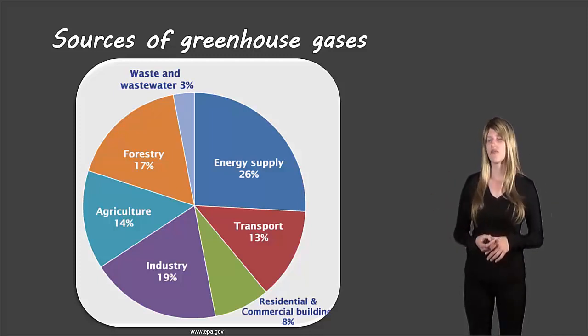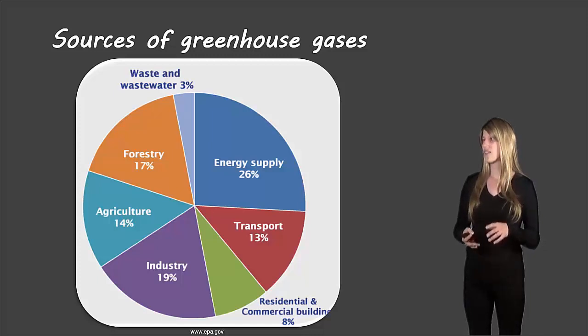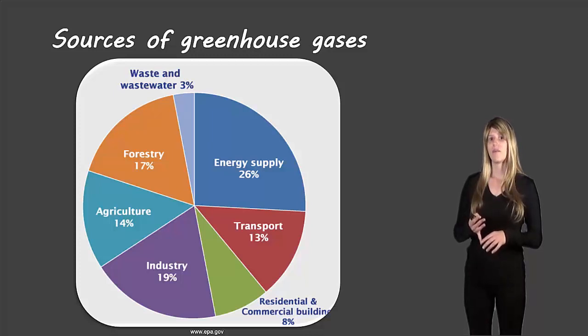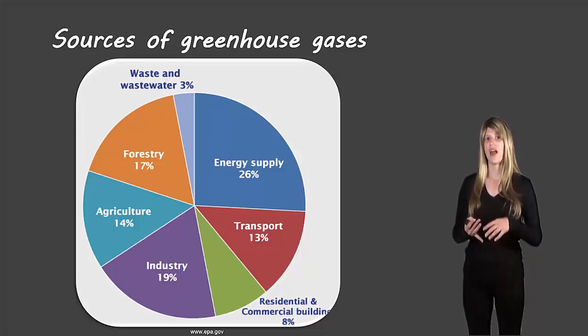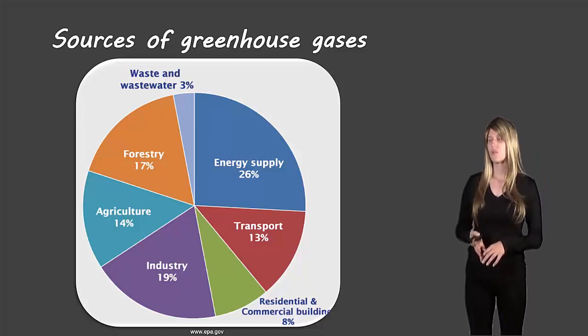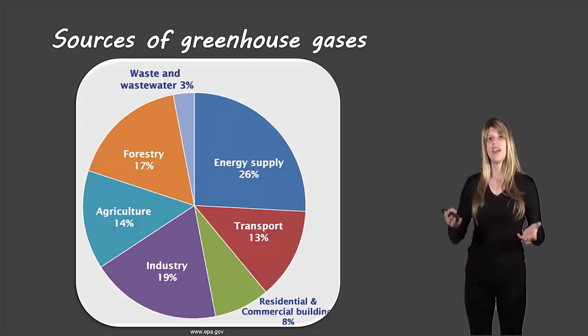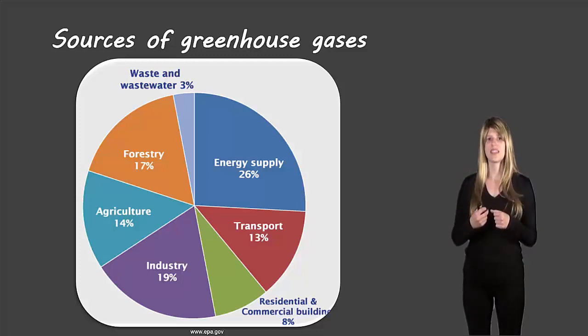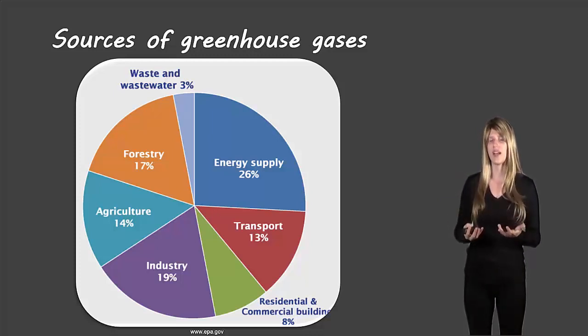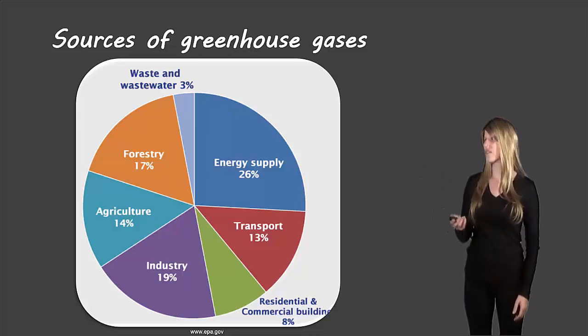And here are some sources of greenhouse gases. So we can see things like residential and commercial buildings, so that's something that we can all have an impact on if we think about how we're using our energy in our homes. Transportation, that's a big one for greenhouse gases. Industry, some people don't realize that agriculture and forestry have major impacts on greenhouse gases. If we're thinking about forestry we're also thinking about trees that we're cutting down and those trees would normally be taking in some things like carbon dioxide which is a greenhouse gas. So all of these are sources of greenhouse gases.